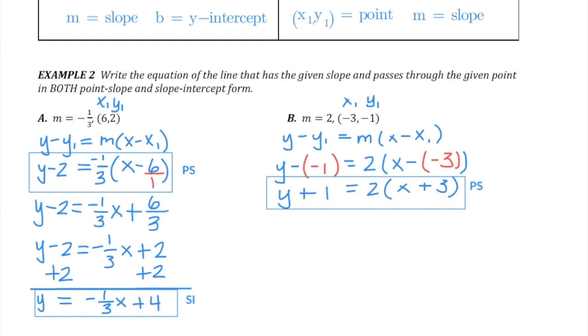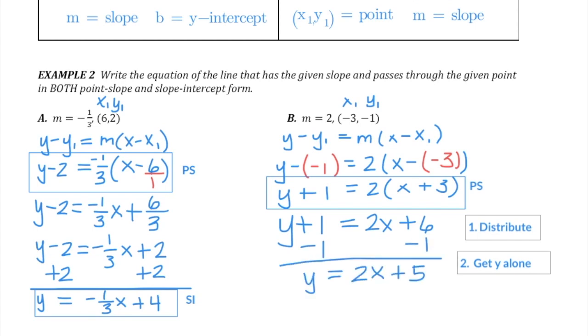Now to get from point-slope to slope-intercept form, it's always a two-step process. First, distribute the slope, 2 times x, 2 times 3, then get rid of the plus 1 attached to the y by subtracting 1. And this is now the slope-intercept form of this line. Again, just a different name for the same line.